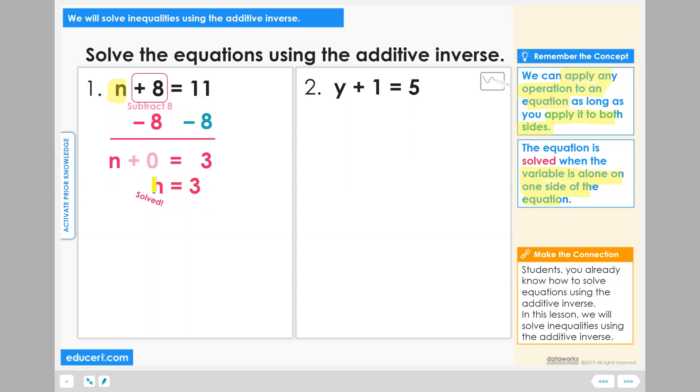This is my solved equation. To quickly check our answer, we would take the original equation, put the value we solved for, which is 3 in this case, substitute it for the variable n, and check to see if it made the equation true.